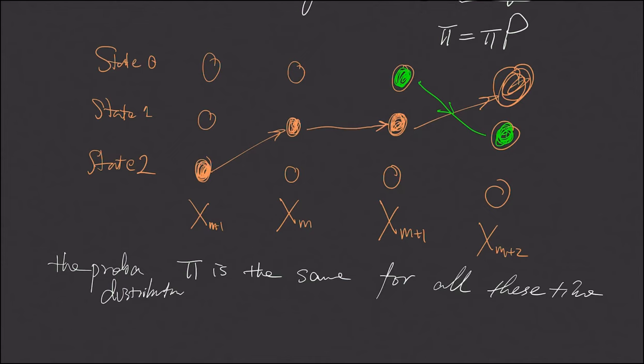For example, at m+2, we can backtrack to m+1 where we're at state 0. And similarly, we backtrack further to state 2 at time m, and maybe we're at state 0 at time m-1.